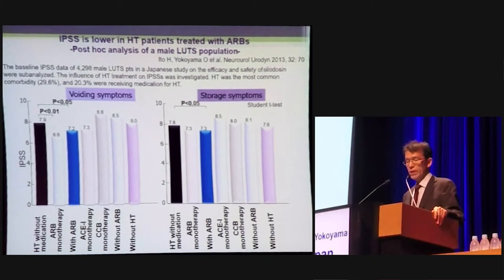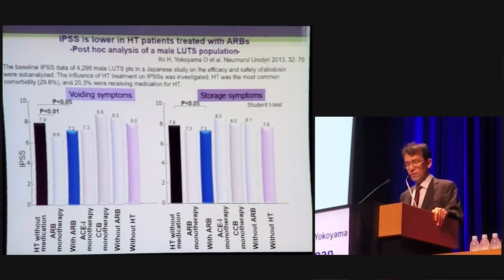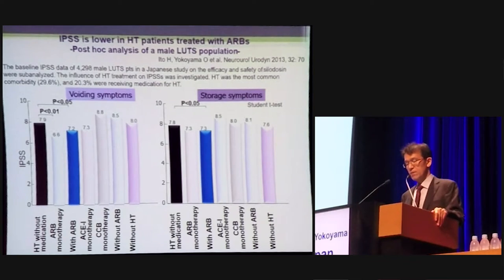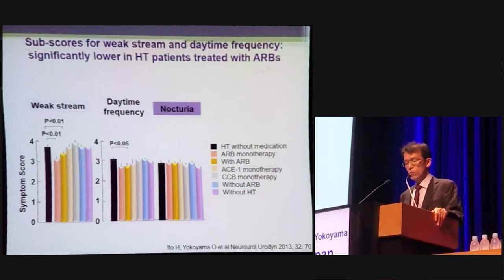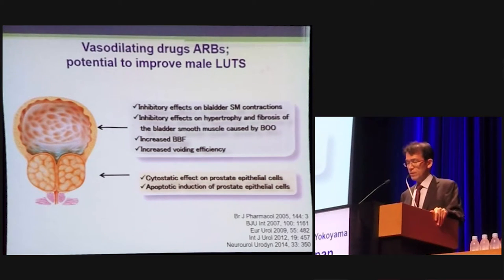We previously reported that IPSS is lower in hypertension patients treated with ARBs. The baseline IPSS data of 4,000 male LUTS patients in a Japanese study on the efficacy and safety of silodosin were sub-analyzed. Compared with hypertension patients without medication, IPSS was significantly lower in patients treated with ARBs in both voiding and storage symptoms. The surface score for urinary stream and daytime frequency was significantly lower in hypertension patients treated with ARBs. Therefore, ARBs may have the potential to improve male LUTS caused by BPH because of their inhibitory effects on bladder smooth muscle contraction, inhibitory effects on hypertrophy and fibrosis of bladder muscle caused by bladder outlet obstruction, and increased bladder blood flow.